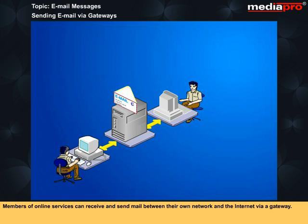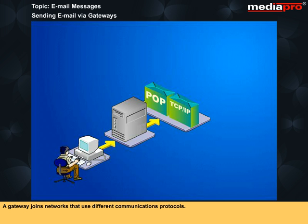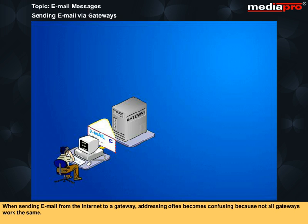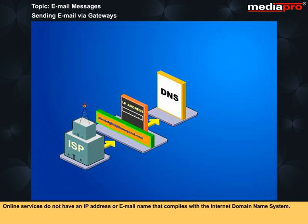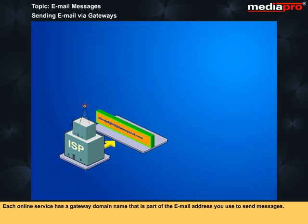Members of online services can receive and send mail between their own network and the internet via a gateway. A gateway joins networks that use different communications protocols. When sending email from the internet to a gateway, addressing often becomes confusing because not all gateways work the same. To send an email to someone on an online service, you must know his or her email address. Online services do not have an IP address or email name that complies with the internet domain name system.